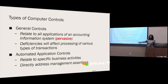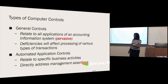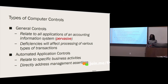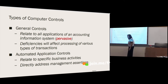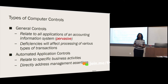Application controls relate to specific business processes — such as the sales and collection cycle or the acquisition and expenditure cycle. They are directly related to management assertions because management is making assertions about transactions. For example, the three-way match control would be built into the expenditure and acquisition cycle application, and the matching of a shipping document to ensure a sale is only recorded when there is a corresponding shipping document would be housed in the sales and collection cycle application.